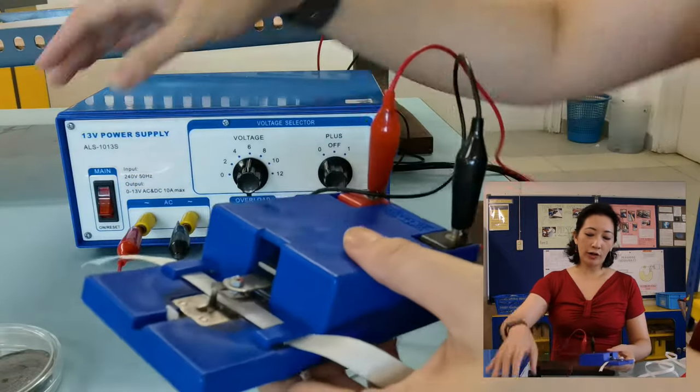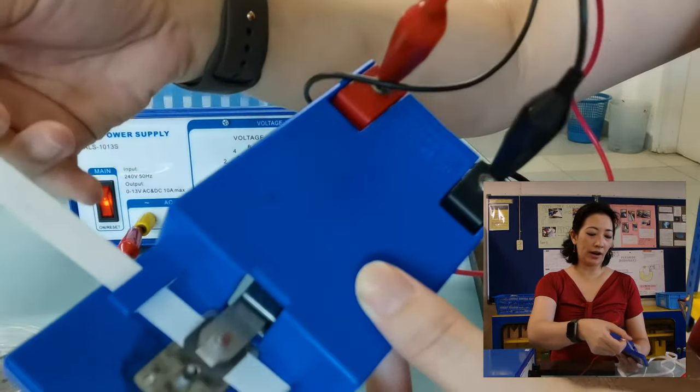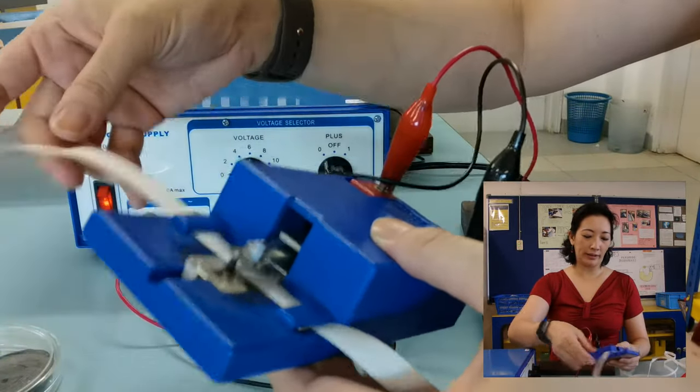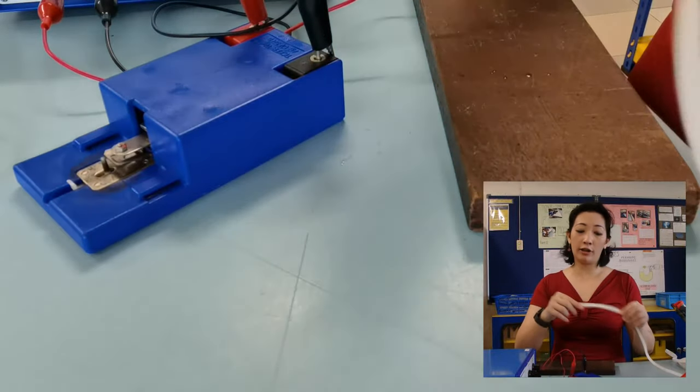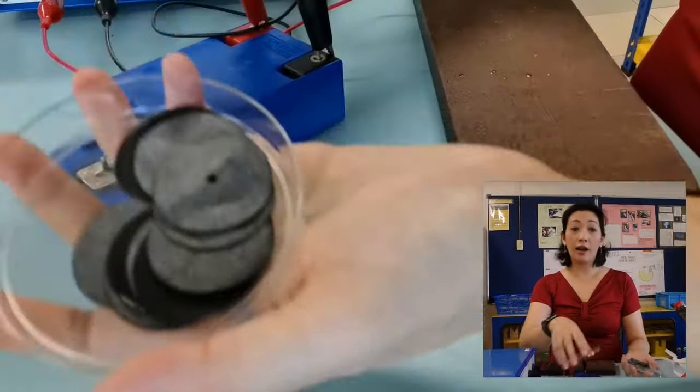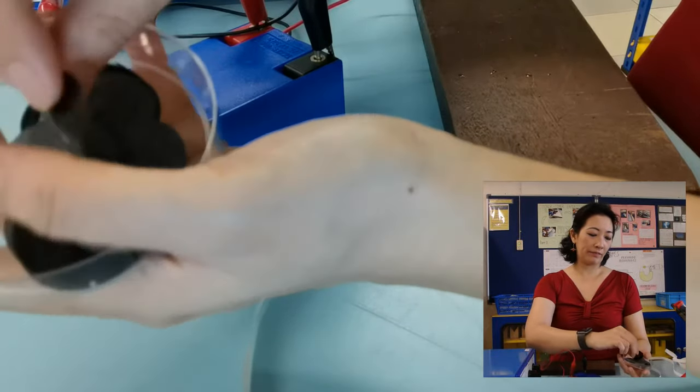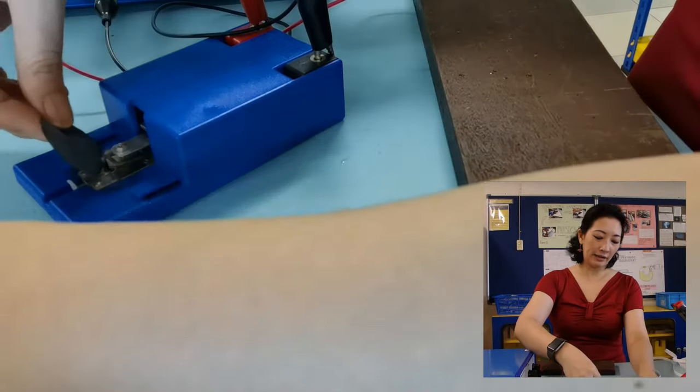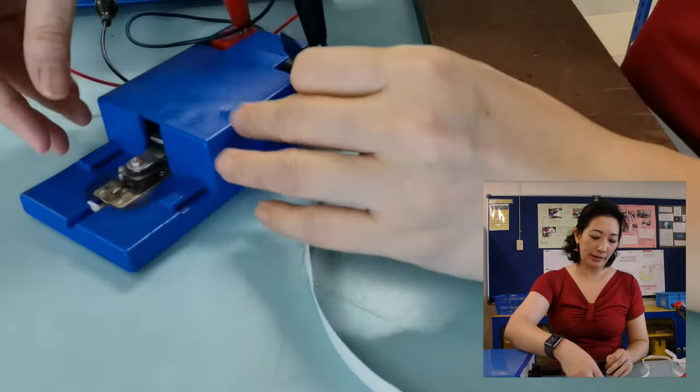But if you try to switch it on now, you'll find that there's not very many markings available to be seen. Some ticker tapes are not able to create a dot straight away, which is why we need to use carbon paper. The carbon paper is designed also to work with the ticker tape.